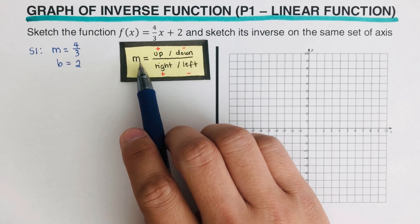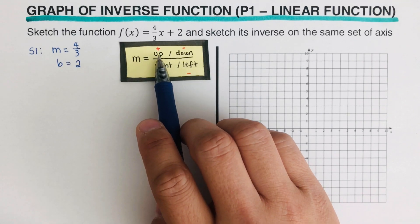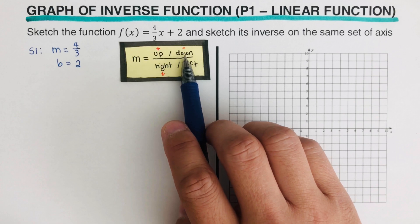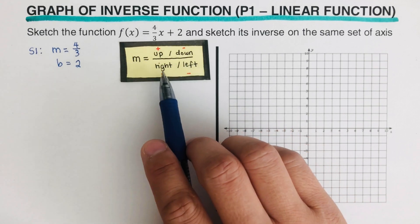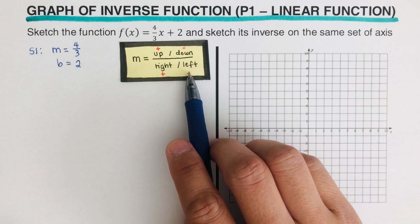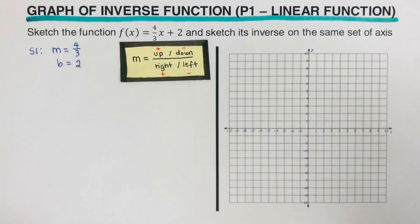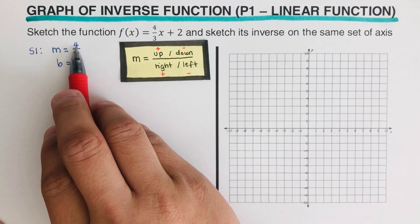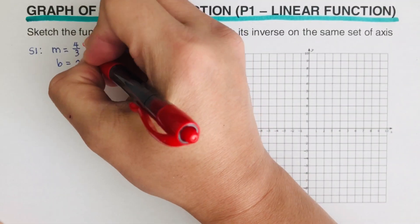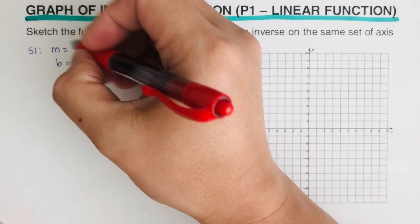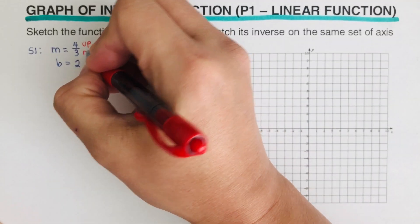If the numerator is positive, we go up. If the numerator is negative, we go down. If the denominator is positive, we go right. If the denominator is negative, we go left. In this case, since our numerator is positive we go up, and since we have a positive 3 we go to the right.